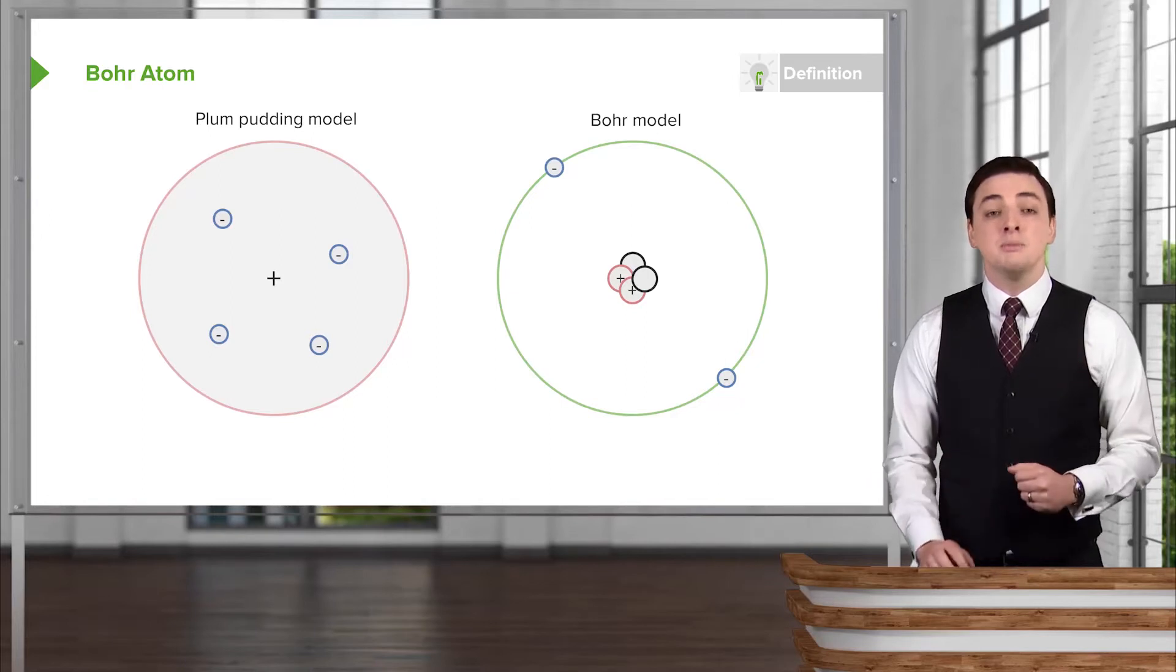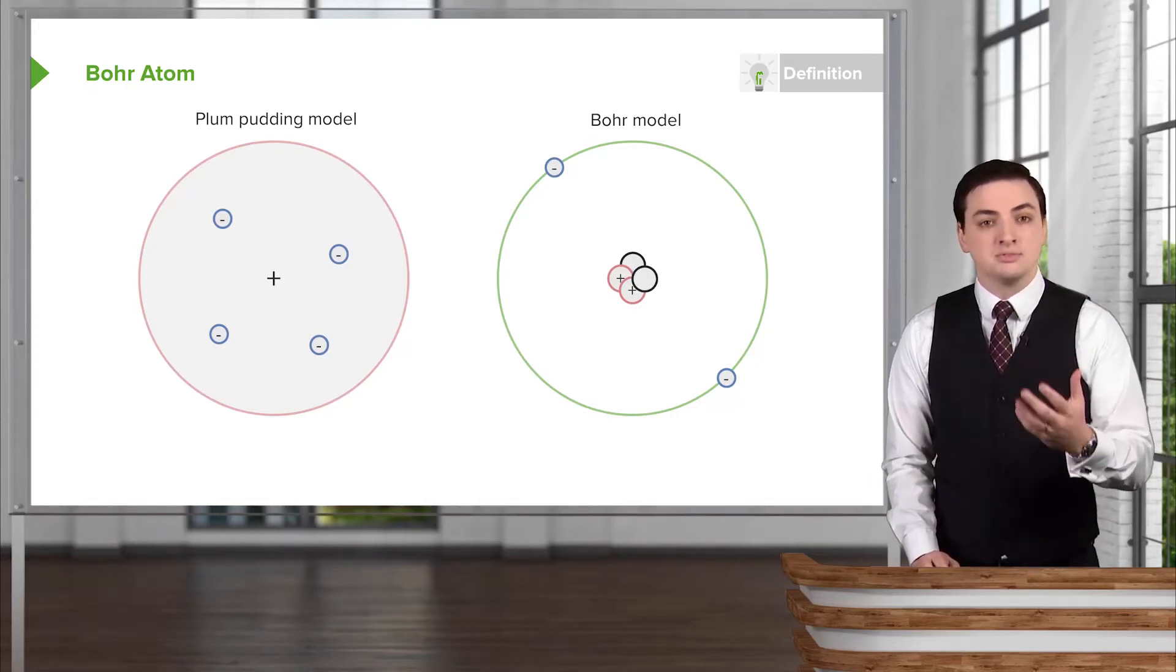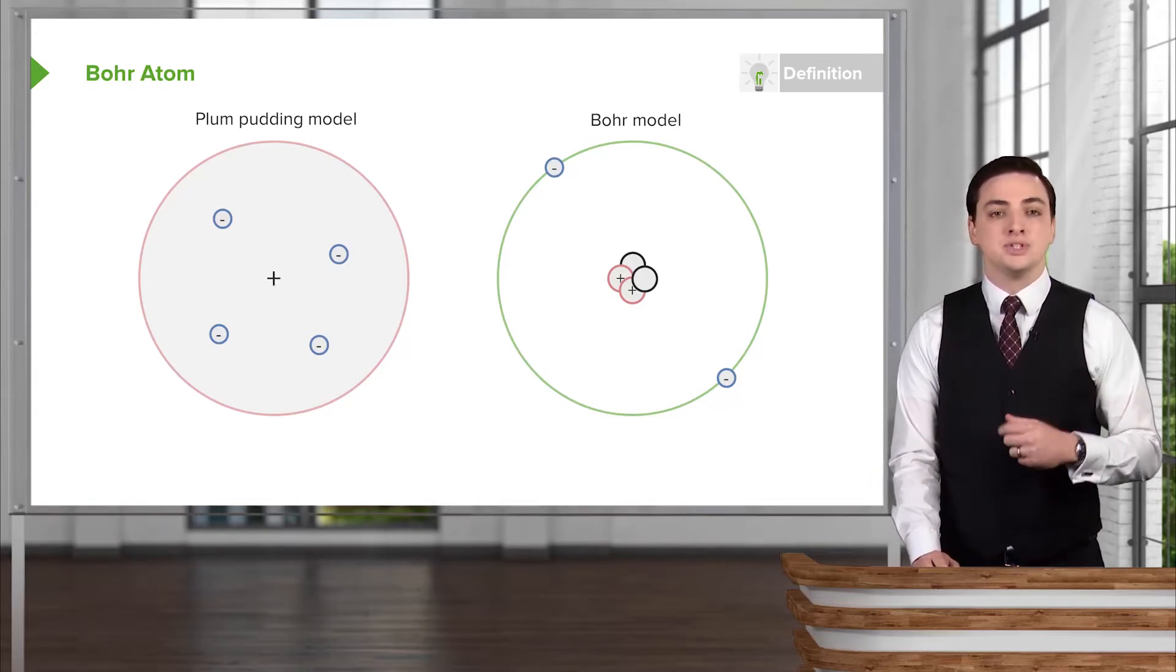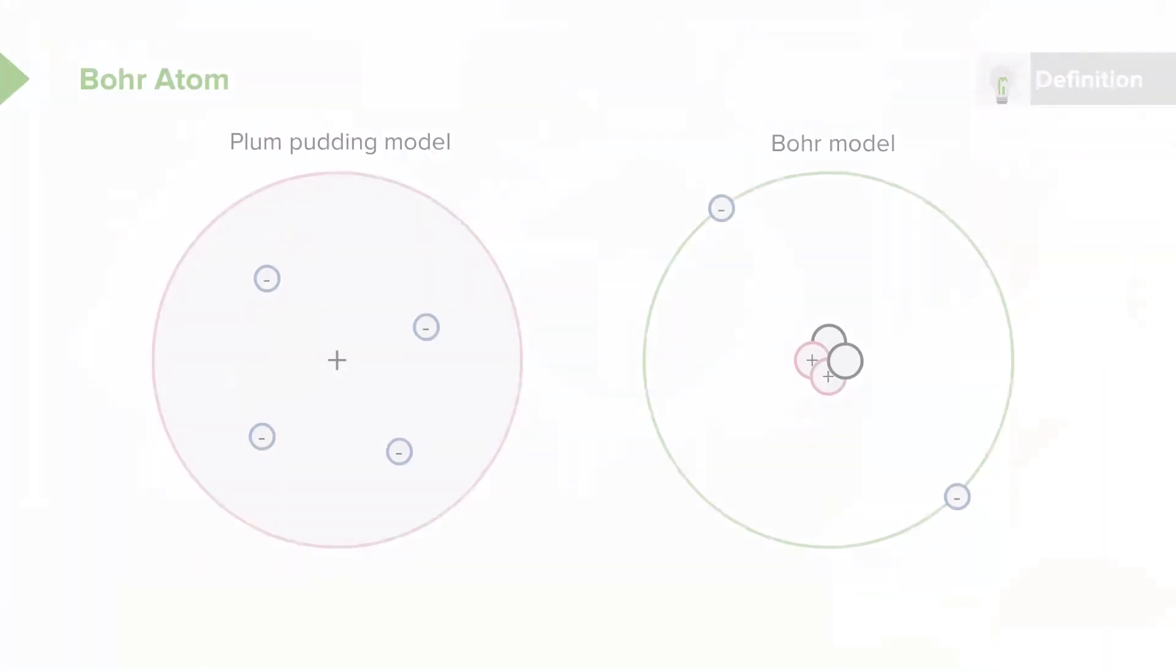But then some experiments were conducted where different kinds of particles were shot at an atom to see how they bounced off of it. To everybody's great surprise, they found that they would bounce off a hard core in the center of the atom but would otherwise go right through. This is the Bohr model of the atom, which you can see on the right.